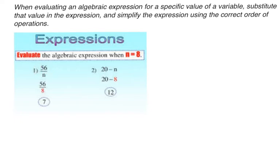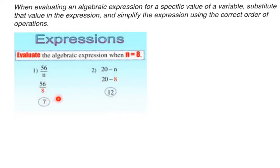Here are two examples of expressions: we have a number, a variable, and an operation — here it's division, here it's subtraction. The problem is asking you to evaluate that expression when n is 8. That just means anywhere you see an n, you replace it with 8, then use order of operations to simplify until you get a single number as your final answer.